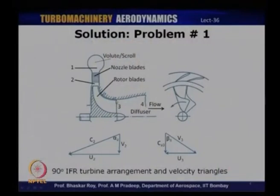This is a simple problem. We have some dimensions of the rotor — the rotor diameter, the rotational speed, and the nozzle inlet angle. We have been given that the rotor mean diameter is one half of the rotor exit diameter and the relative velocity at rotor exit is twice the relative velocity at rotor inlet. Based on this data, we need to find the specific work done. As I always emphasize, we start solving a problem with the velocity triangles.